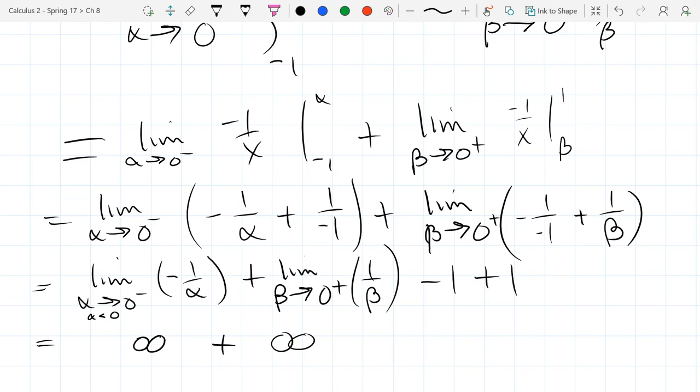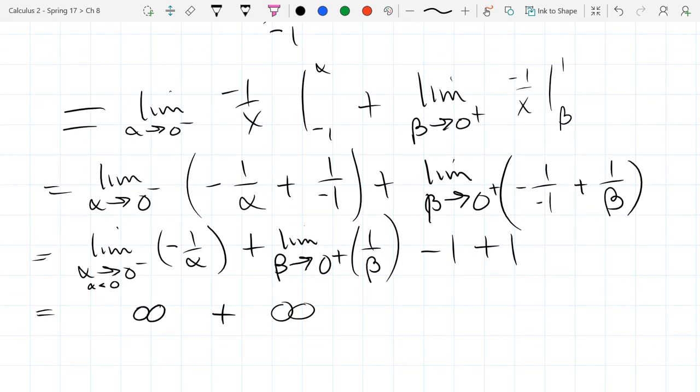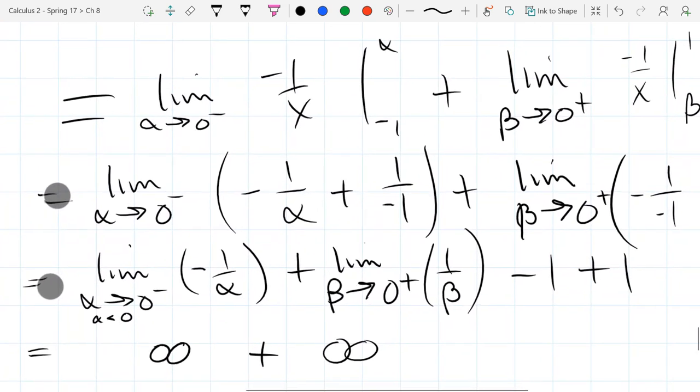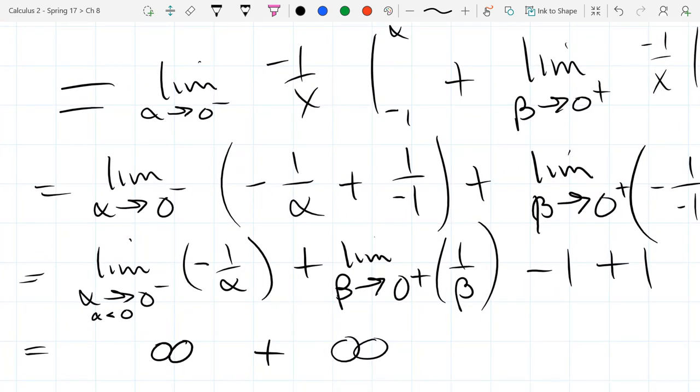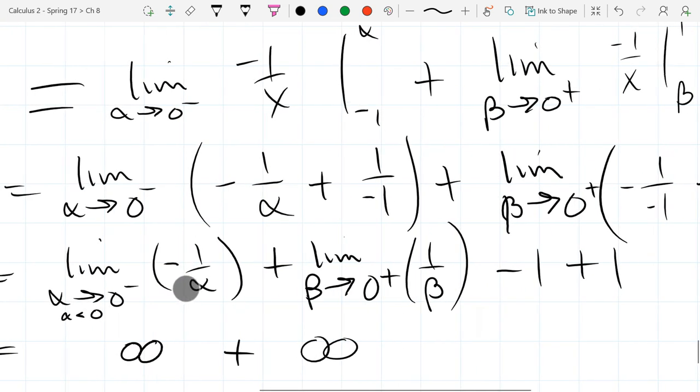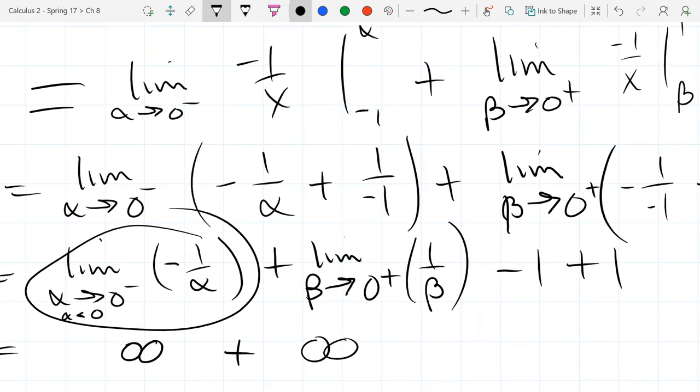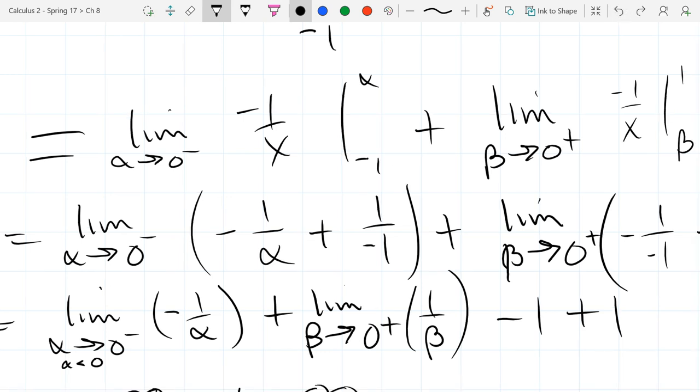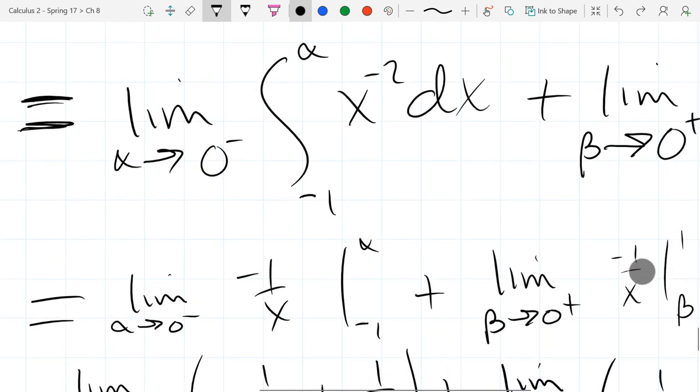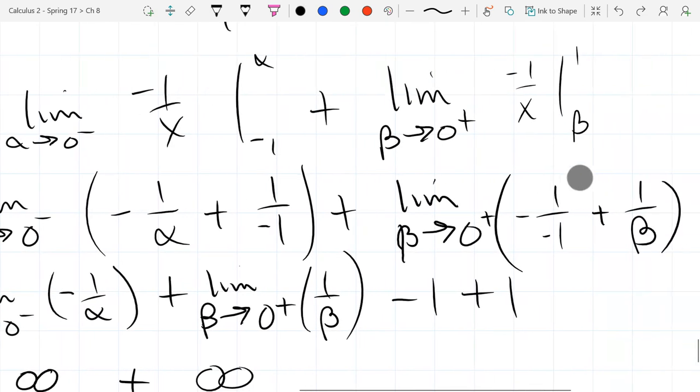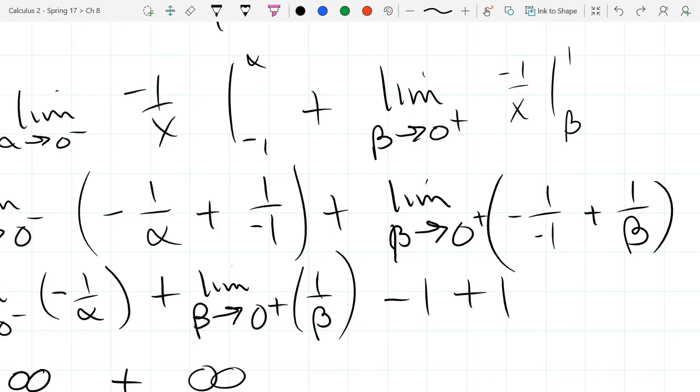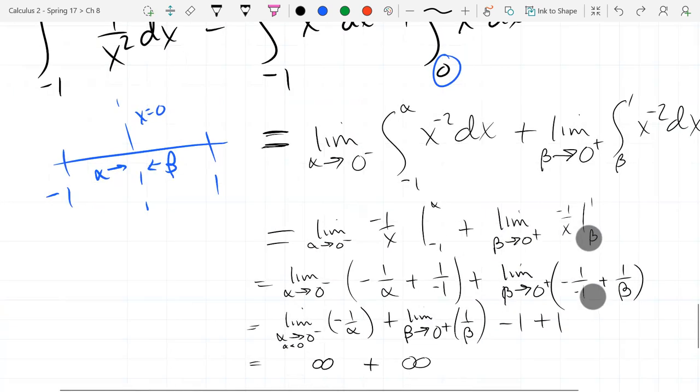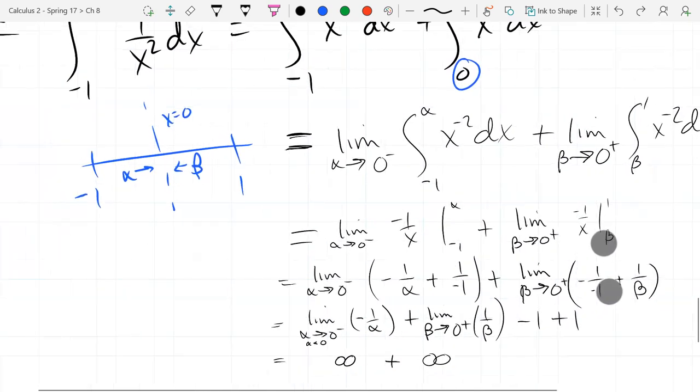I think you forgot the negative on the second limit there. How about that? I think there's three negative signs in there. Is it the negative sign for the small end of the beta integral? Oh, actually, never mind. No, this is okay.